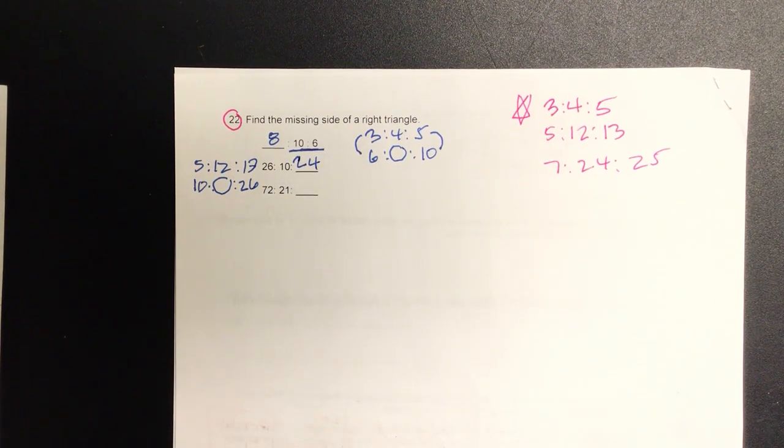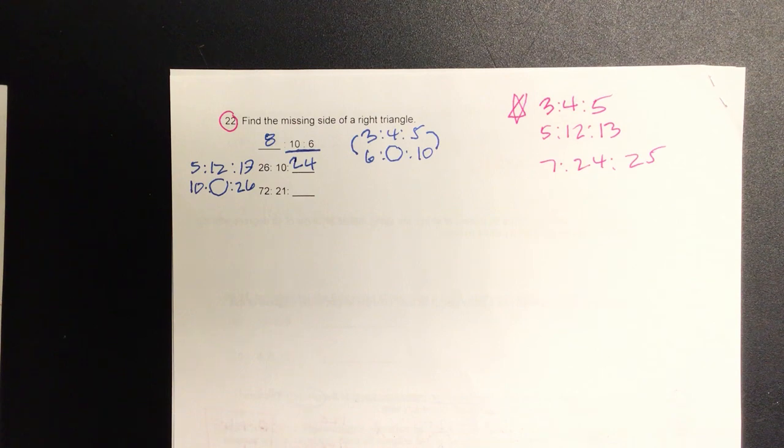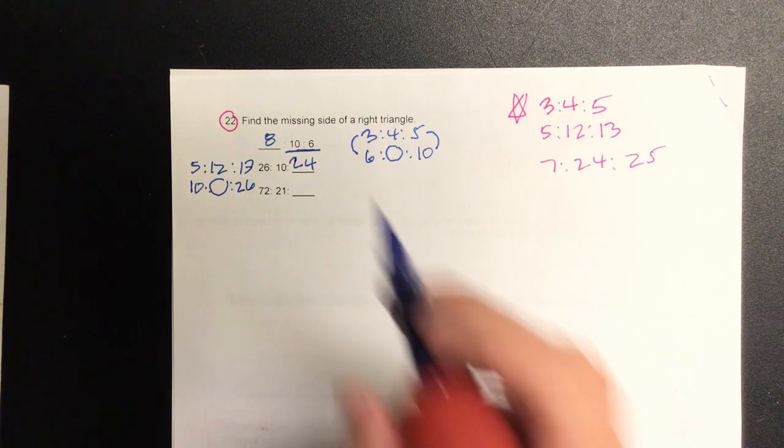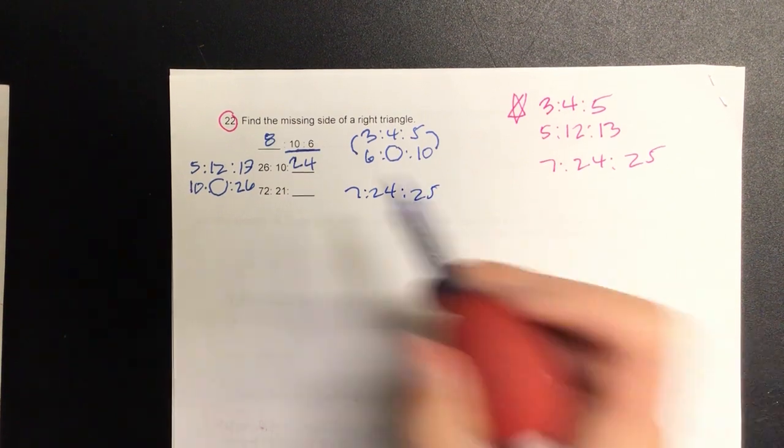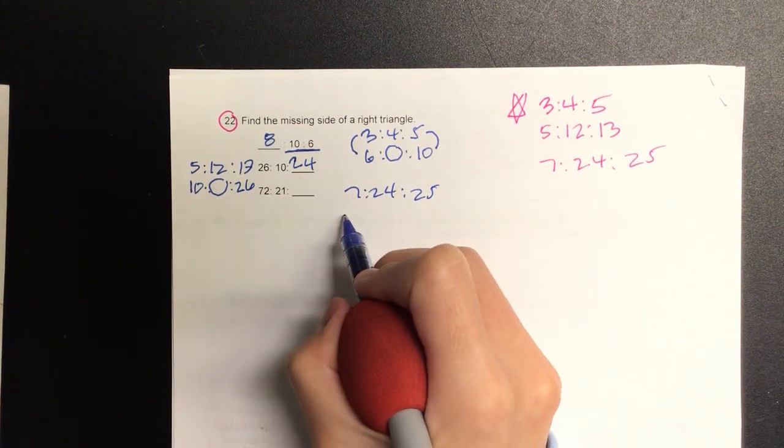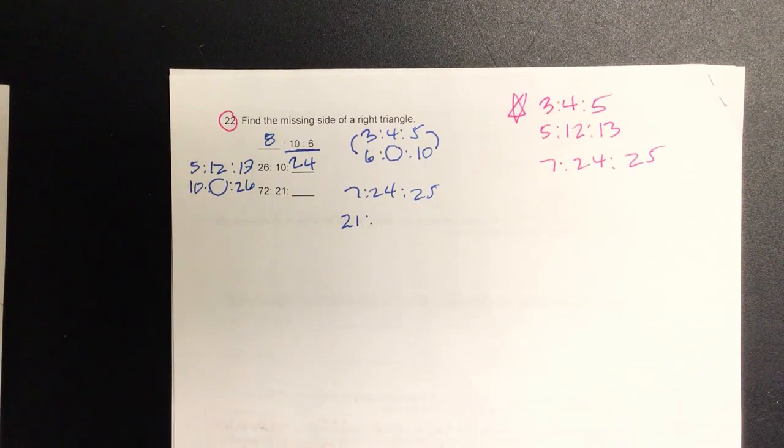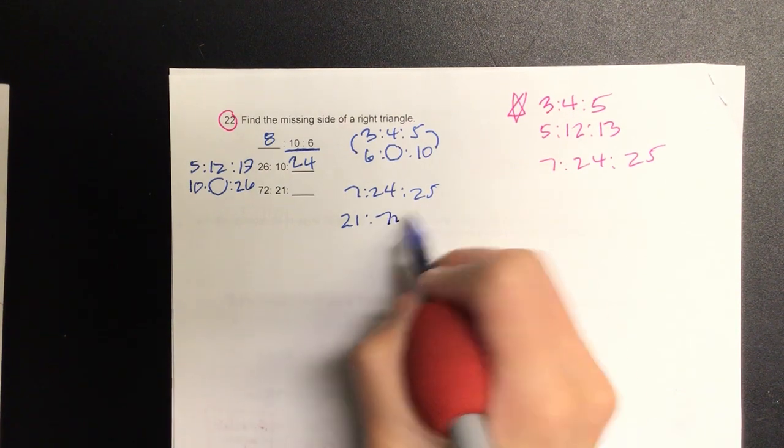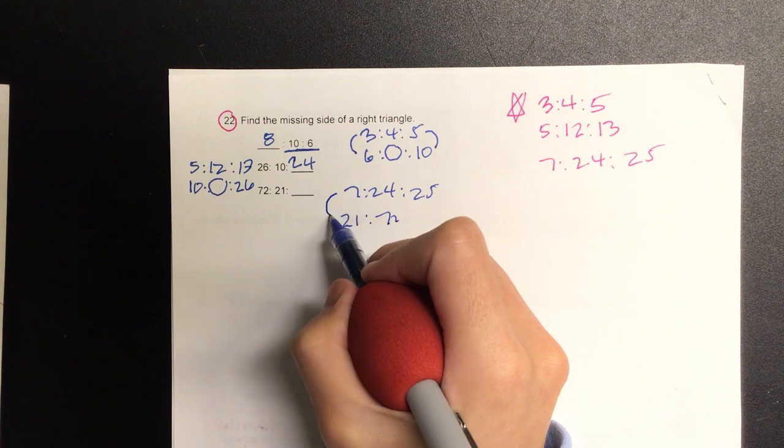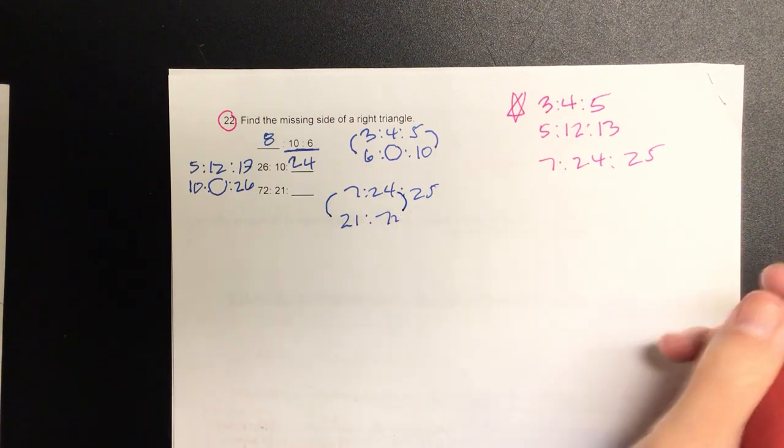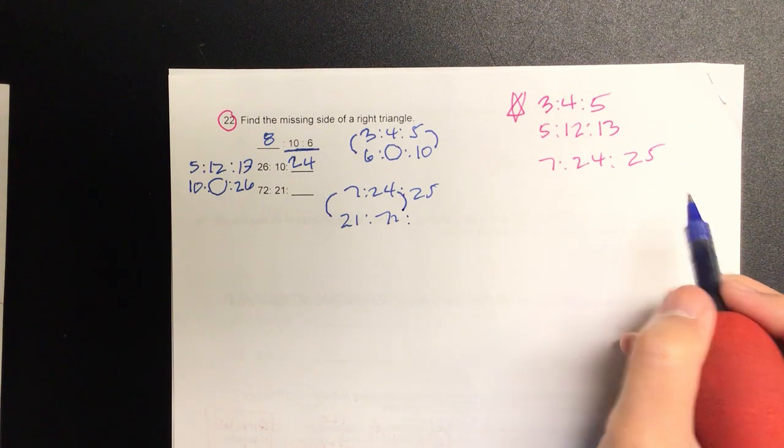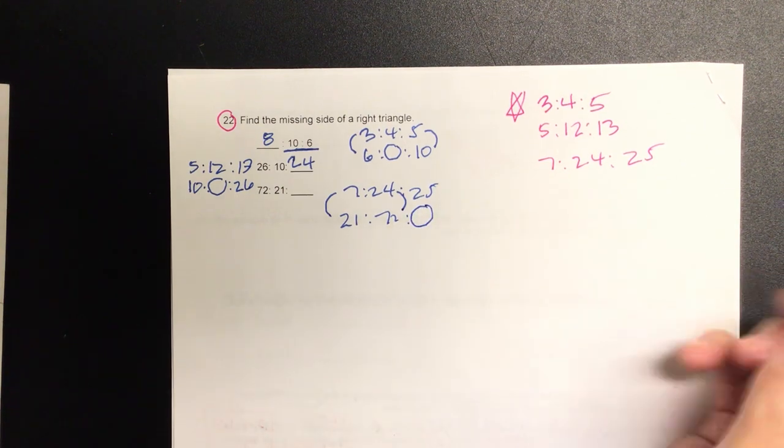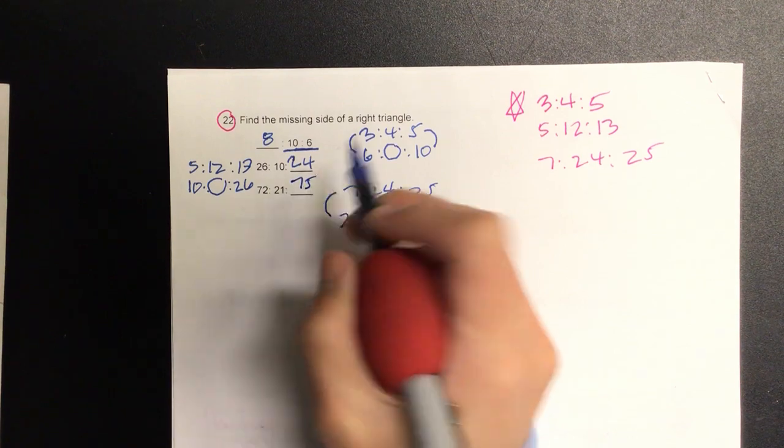And then we have the next one is probably most likely seven, twenty-four, twenty-five. Okay, so let's check. Seven divisible by twenty-one? Where would I write seventy-two? Twenty-four. So we know seven times how many is twenty-one? Three. Is twenty-four times three also seventy-two? Yes. So that means twenty-five times three is seventy-five.